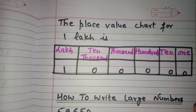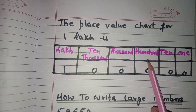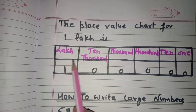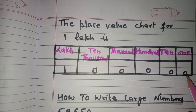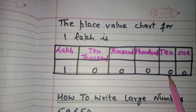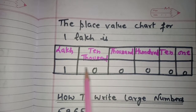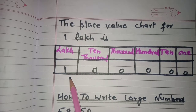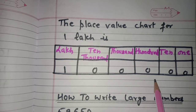The place value chart for one lakh: mention the places from the extreme right — ones, tens, hundreds, thousands, ten thousands, and lakh. For one lakh, the zeros are placed under ones, tens, hundreds, thousands, and ten thousands respectively, and the digit one comes under the lakhs place.